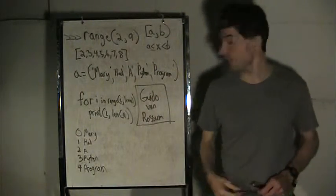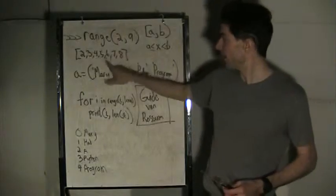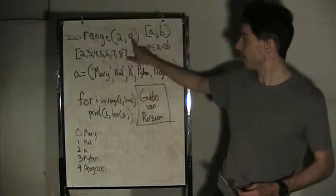So the range works with integers. It's inclusive of the A value, 2, and exclusive of the B value, in this case 9.